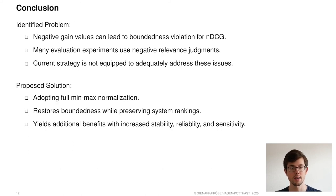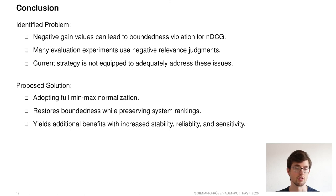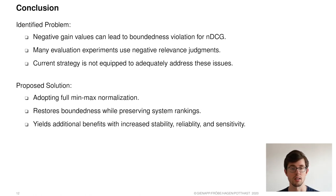In conclusion, we identified a common problem in modern IR evaluation. The arguably justified use of negative relevance judgments can lead to a boundedness violation for NDCG. While many experiments annotate negative labels, the current practice is to simply ignore these for evaluation — and this does not adequately address the problem. We propose an alternative solution adopting full min-max normalization for NDCG. This restores boundedness while preserving system rankings, and also yields additional benefits with increased stability, reliability, and sensitivity. Thank you for your attention.